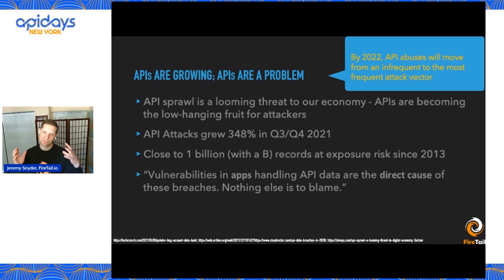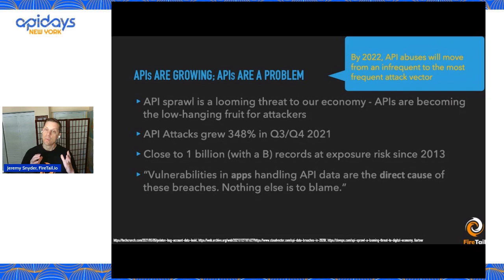We're all familiar with the Gartner prediction that API abuses would move from an infrequent to the most frequent attack vector. Here we are in 2023 — I don't believe that has come to pass. I still think business email compromise, phishing, et cetera, is still the number one attack vector.